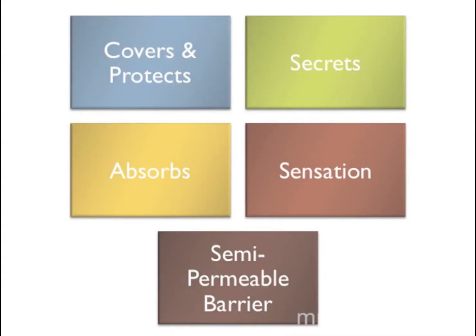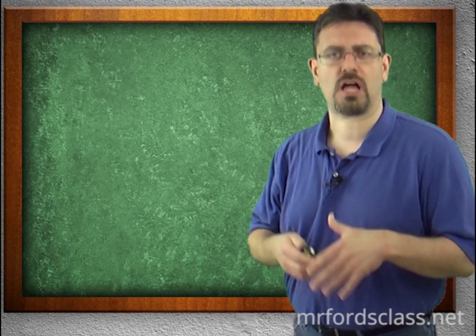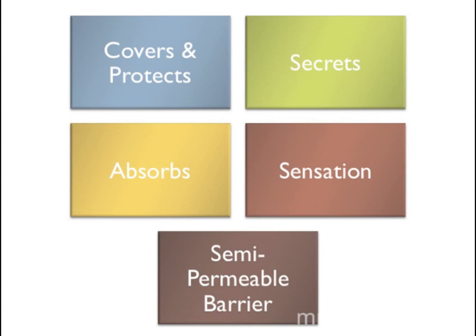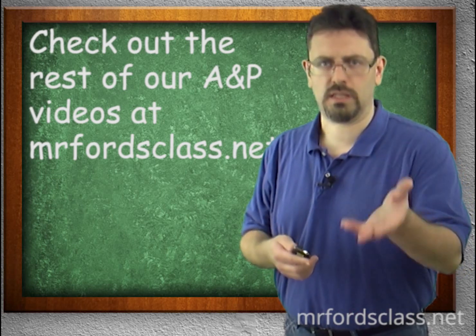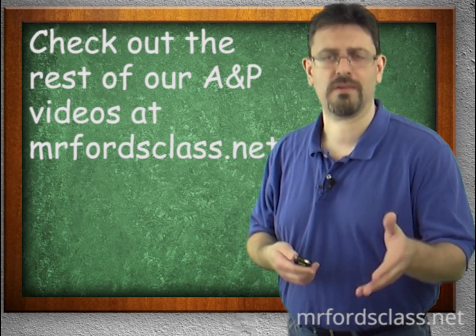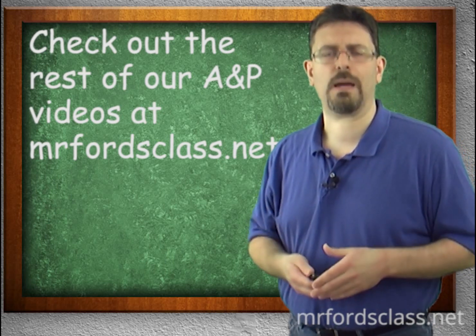Looking at the general functions of epithelial tissue: it covers and protects; it secretes — we'll get more into that when we talk about glands; it absorbs, for example in the gastrointestinal tract where it helps absorb nutrients; it's responsible for sensation, so you feel things; and it forms a semi-permeable barrier, which is important in the cardiovascular system at the capillaries and in the respiratory system at the alveoli where gas exchange occurs.